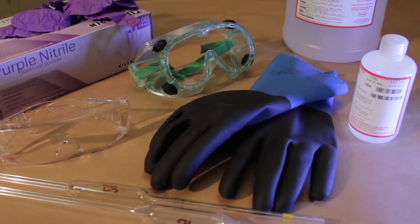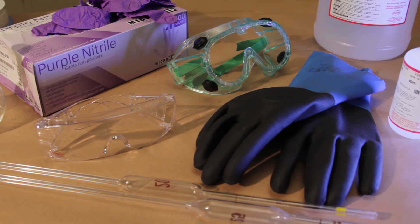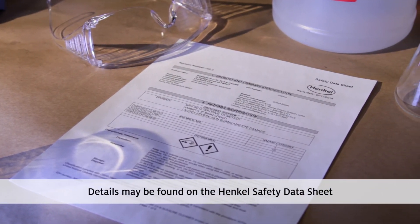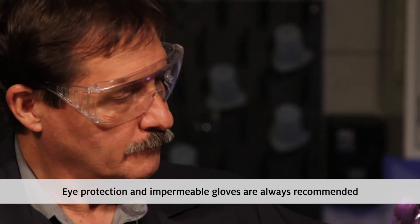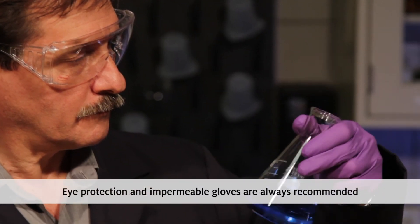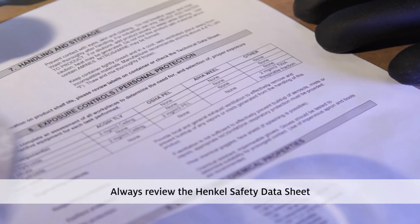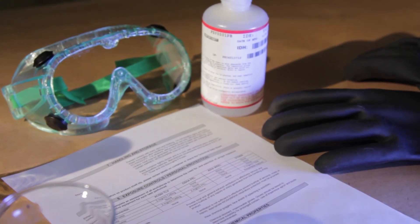It is important to wear the correct protective equipment when handling chemicals and glass test equipment. Details may be found on the safety data sheet for the Henkel product that you are using. Eye protection and impermeable gloves are always recommended to avoid exposure to chemicals. Always review the safety data sheet before using a material for the first time, so you understand any risks and what PPE may be required.